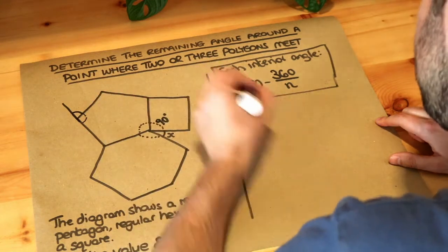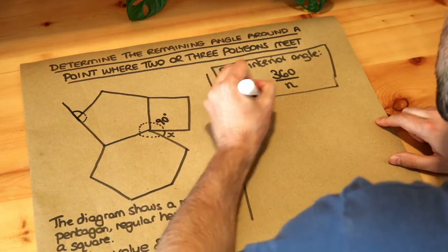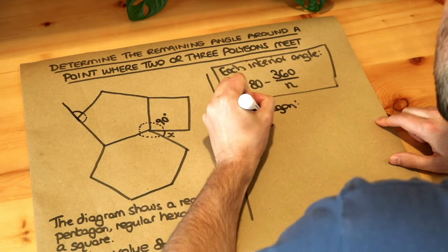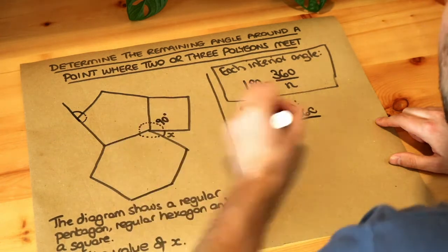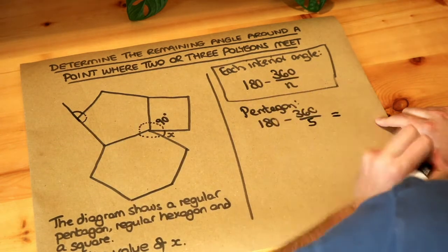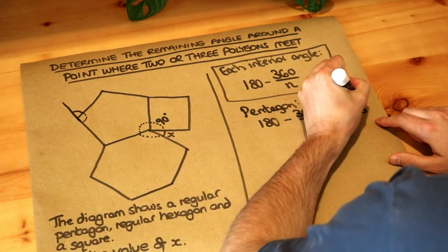So for the pentagon we just do 180 minus 360 divided by how many sides does the pentagon have? Five. And if you do that on a calculator or in your head that gives you 108 degrees.